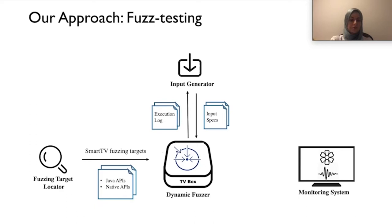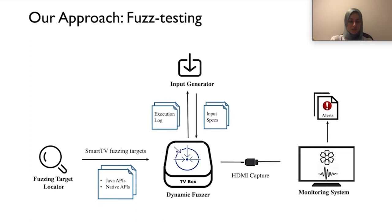The monitoring system analyzes the execution output to uncover potential vulnerabilities. To detect physical anomalies, we redirect the execution HDMI output to the system via an HDMI capture device. The monitor captures and compares display and audio signals before and after each test case, and outputs alerts if discrepancies are detected.